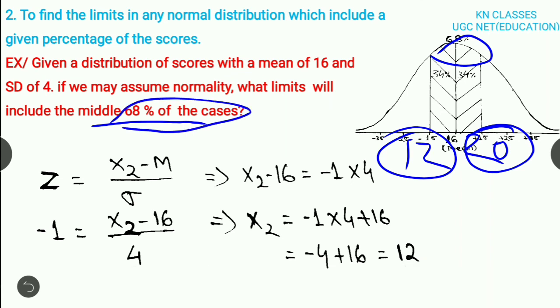So the 68% of the cases fall between the scores 12 and 20. Friends, this was the question related to the second application of normal probability curve. Hope you are clear with what I have discussed. If this video is good for you, then like this video and subscribe to my channel for getting more updates. Thank you.